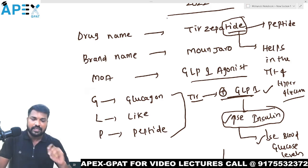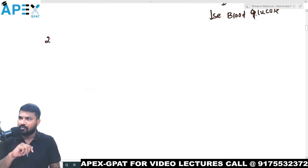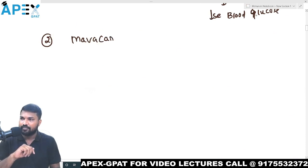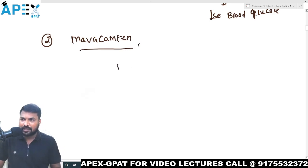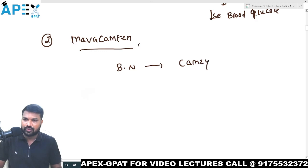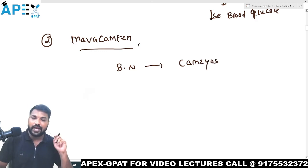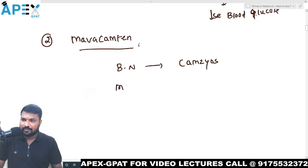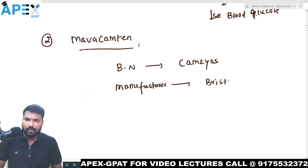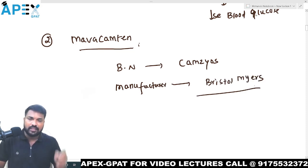Let's move to the second approved drug — Mavacamten. The brand name of this drug is Camzyos. The manufacturer is Bristol Myers.